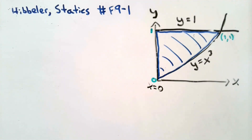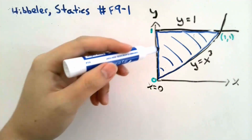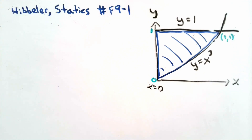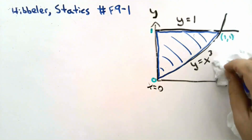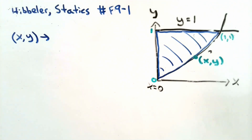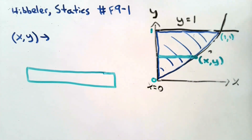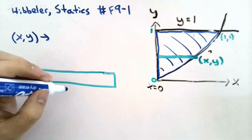Now that we've identified our shape and defined our limits, we need to establish a coordinate system to solve this problem. Because this problem is given in the x and y plane, it's easy to set our coordinate system as simply x and y. We do this by first selecting a random point at one of the edges of our shape. In this case, I'm going to choose a random point with coordinates x, y.